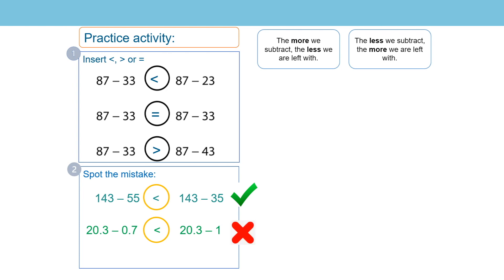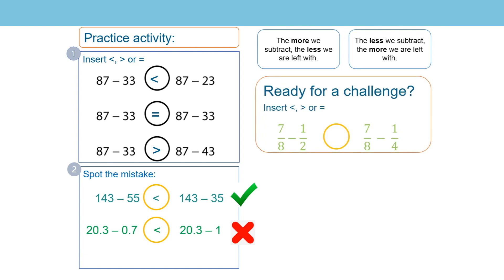Did you manage to spot that mistake? Let's look at the challenge. What's the same and what is the difference in this one? Both minuends are the same — 7 eighths. And when looking at the fractions in the subtrahend, they both have a numerator of 1, but one has a denominator of 2 and one has a denominator of 4. The bigger the denominator, the smaller the fraction, therefore a half is bigger than 1 quarter. The more we subtract, the less we're left with. So 7 eighths subtract 1 half is less than 7 eighths subtract 1 quarter. So I'm going to insert the less than symbol to make that correct.